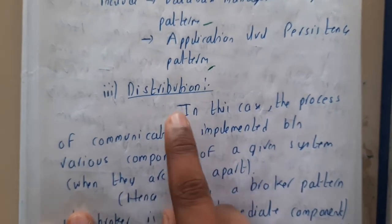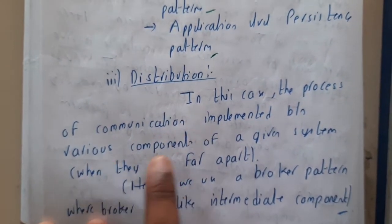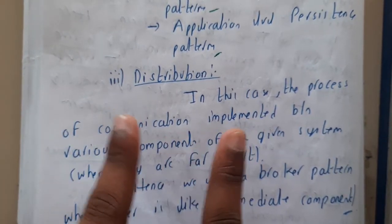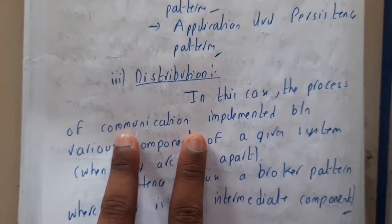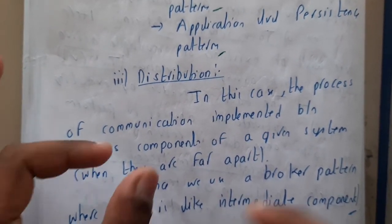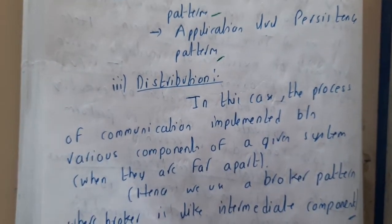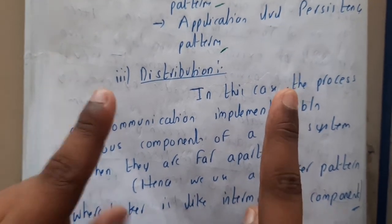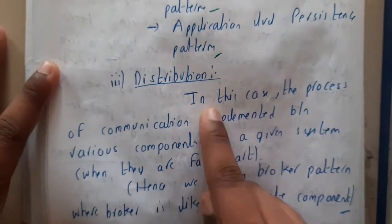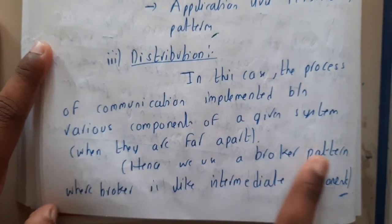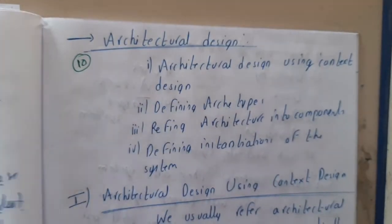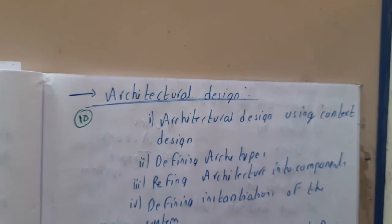The next pattern is distribution. This involves process communication implemented between various components of a system when they are far apart. We cannot say that both devices will always be nearby or connected through a cable — there may be cases where you need to connect to a server to get data. When one system is in one place and another is elsewhere, there should be a connection to transfer data. These kinds of concepts are common in most projects and are inherited from previous projects. For this, we use a broker pattern, where the broker is an intermediate component used to connect them.